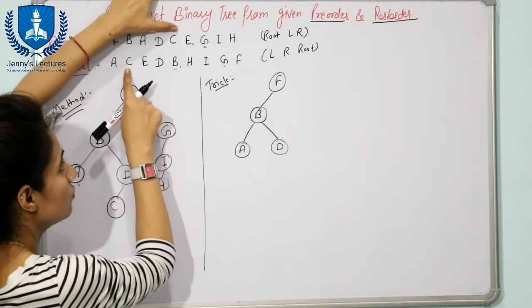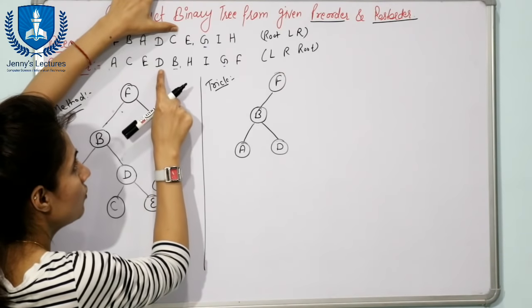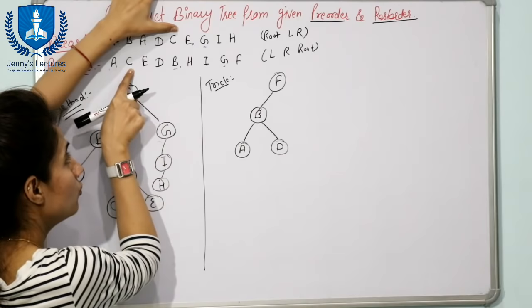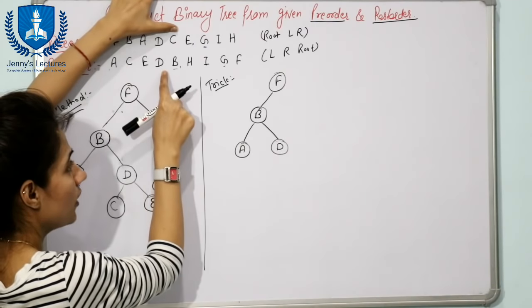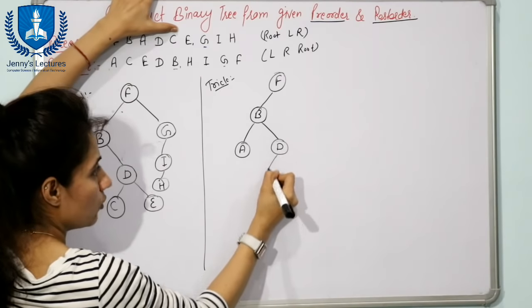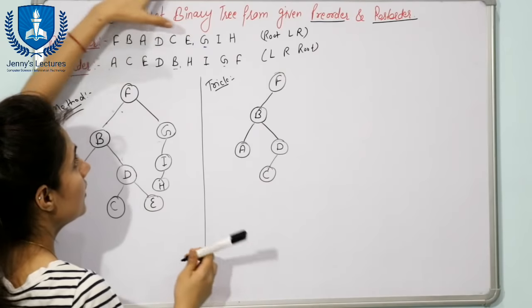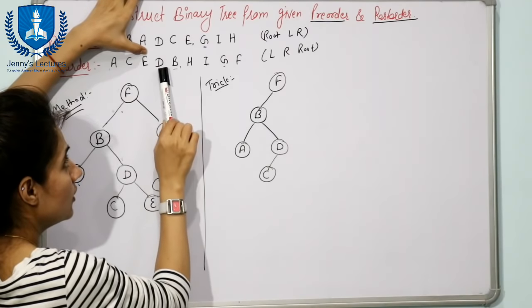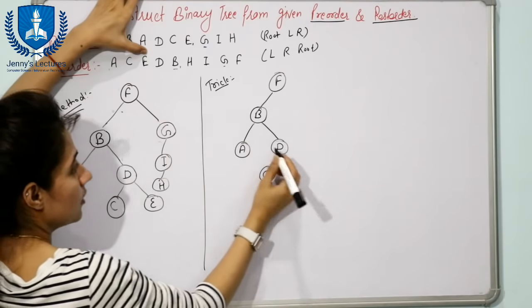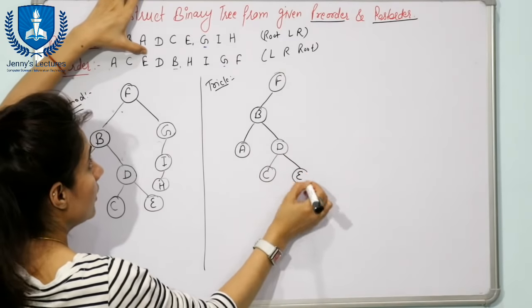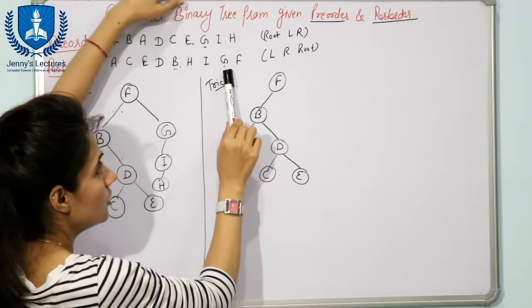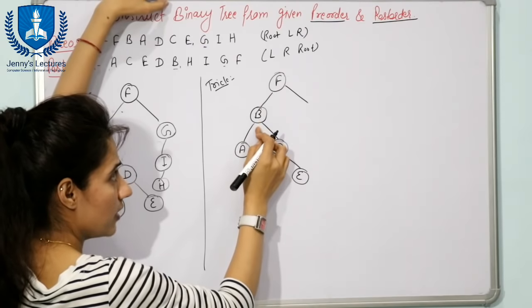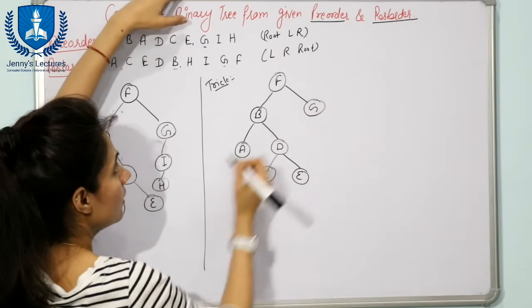Next is C. Find C in post-order. Traversing the post-order from left to right, the first node already in the tree you encounter is D. So C is part of D - write C to the left of D. Next is E. Find E in post-order - traversing left to right, first element found is D. So E is part of D, and since left is filled, write E to the right of D. Next is G. Find G in post-order - G is to the left of F. Left of F is already filled, so write G as right child of F.